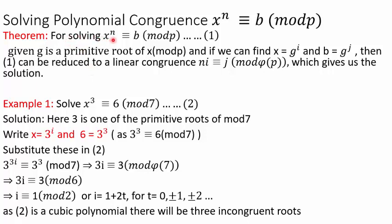For solving x^n ≡ b (mod p), if g is a primitive root and if we are able to write x as a power of g and the right-hand side b as a power of g, then this congruence can be reduced to a linear congruence: ni ≡ j (mod φ(p)), and that gives us the solution. This will be better explained using examples.